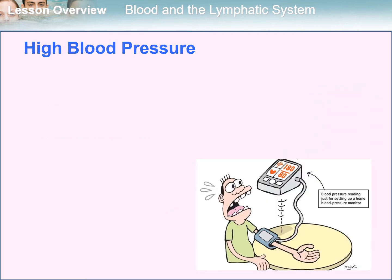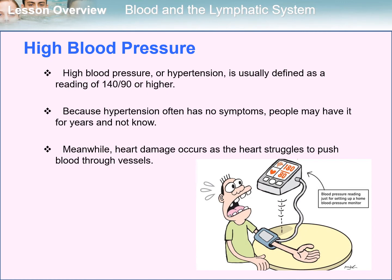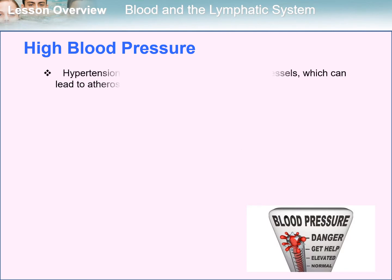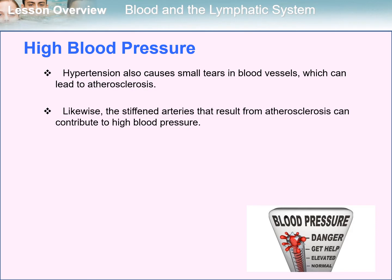Another circulatory disease is high blood pressure. Hypertension is usually defined as a reading of 140 over 90 or higher. Because hypertension often has no symptoms, people may have it for years and not know it. Meanwhile, heart damage occurs as the heart struggles to push blood through vessels. Hypertension also causes small tears in blood vessels, which can lead to atherosclerosis. Likewise, the stiffened arteries that result from atherosclerosis can contribute to high blood pressure.